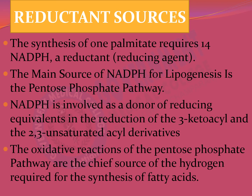The NADPH used in lipogenesis is involved in the reduction of 3-ketoacyl and 2-3 unsaturated acyl derivatives. The oxidative portion of the pentose phosphate pathway is the chief source of hydrogen required for fatty acid synthesis. The HMP shunt is important not only for supplying NADPH for lipogenesis, but also for supplying pentose sugars used in RNA and DNA production, and the NADPH produced is involved in the antibacterial and anti-inflammatory actions of the body.